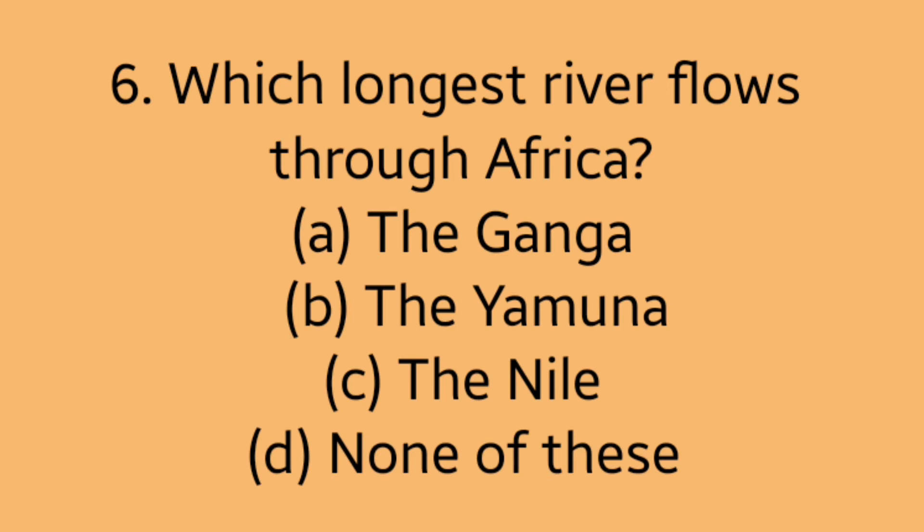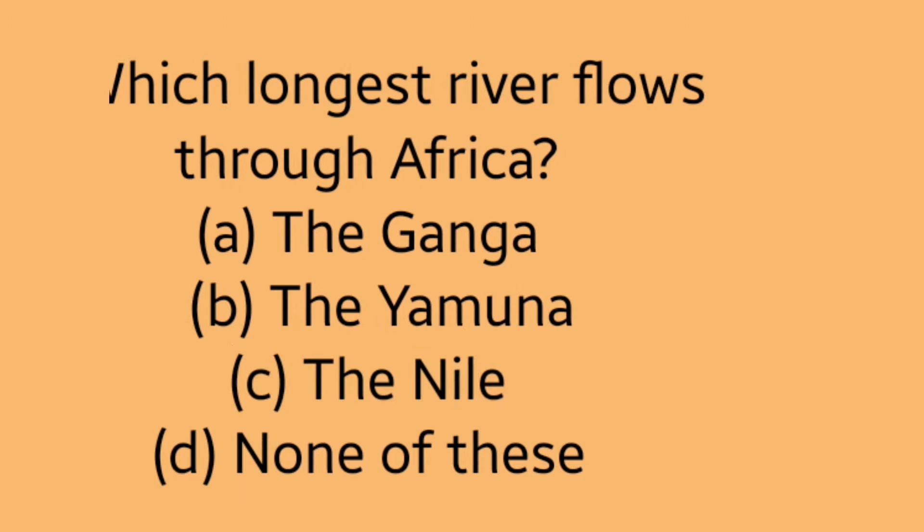Question 6: Which longest river flows through Africa? Option A: the Ganga. Option B: the Yamuna. Option C: the Nile. Option D: none of these. Answer is Option C, the Nile.